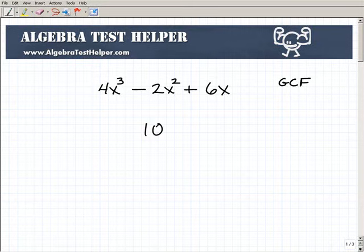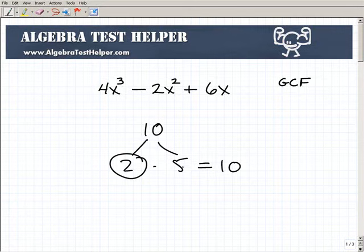For example, 10 is 2 times 5, because 2 times 5 equals 10. So 2 and 5 are factors. If I ask you to factor 10x, you could write that maybe as 10 times x. That gives you 10x.